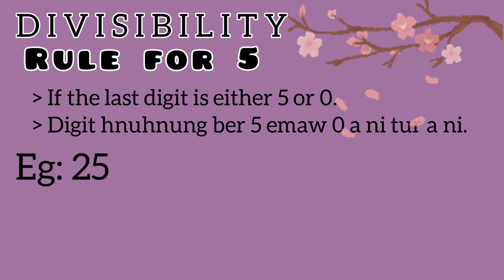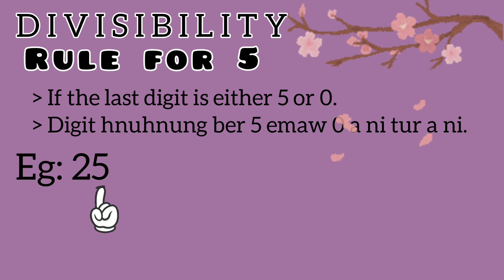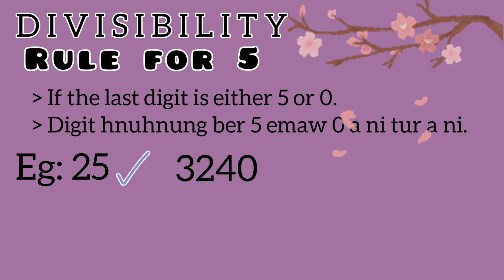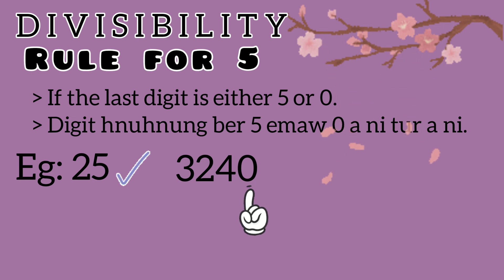Example: 25. The last digit is 5, so 25 is divisible by 5. Example: 3240. The last digit is 0, so 3240 is divisible by 5.